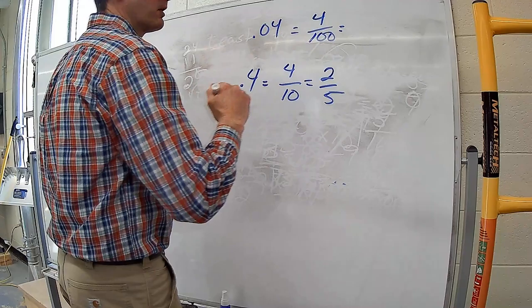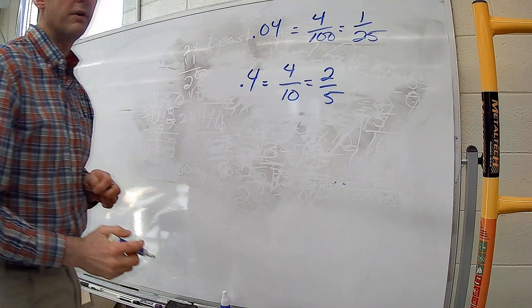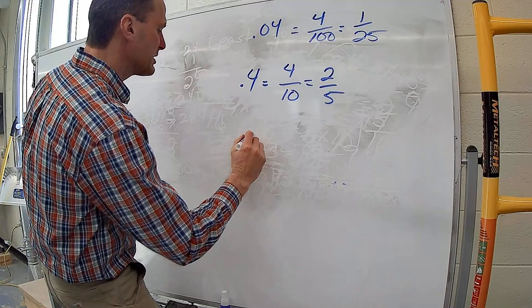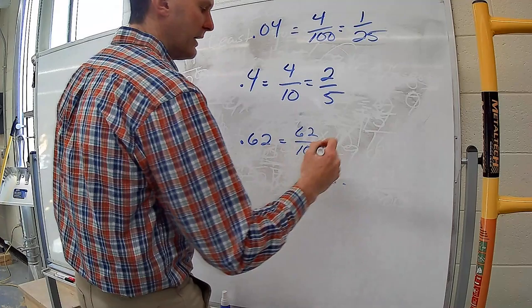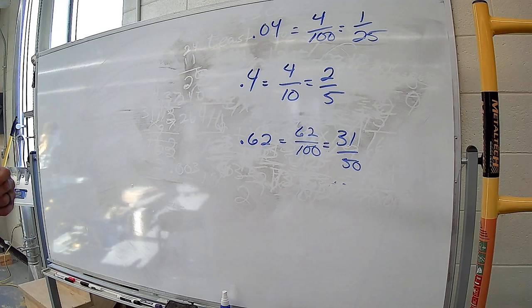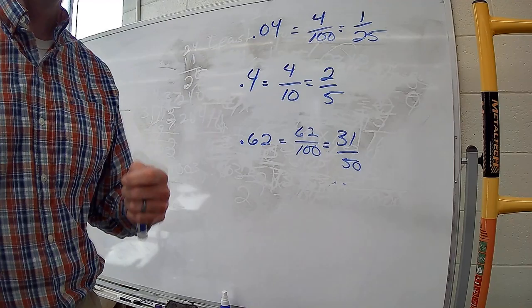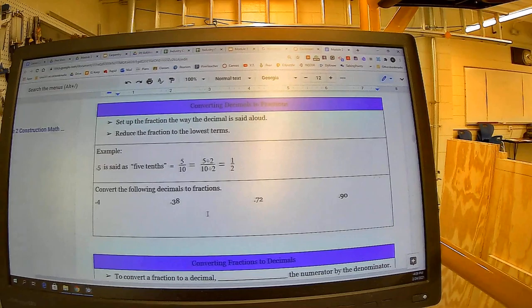For 0.62 — 62 hundredths — that's 62/100. Both are even, so divide by 2: that gives 31/50. Since 31 is a prime number, it cannot be simplified further, so 31/50 is the final answer.